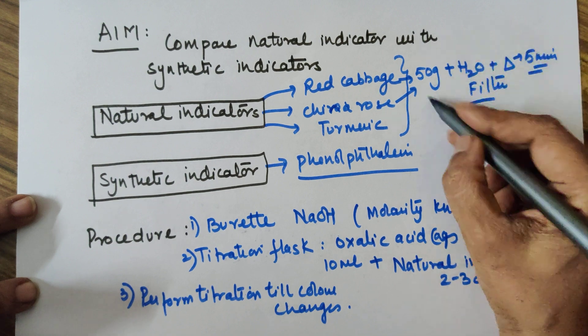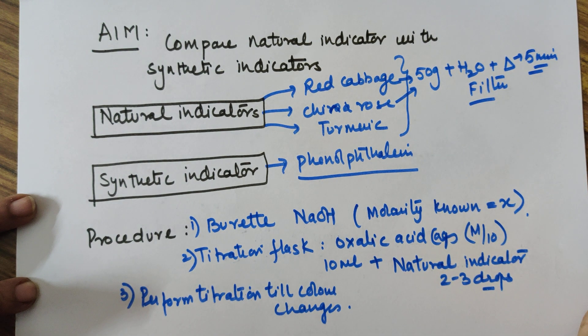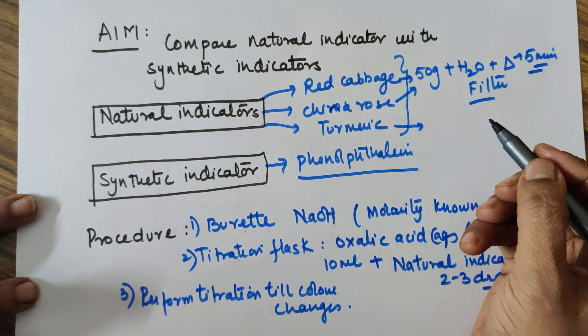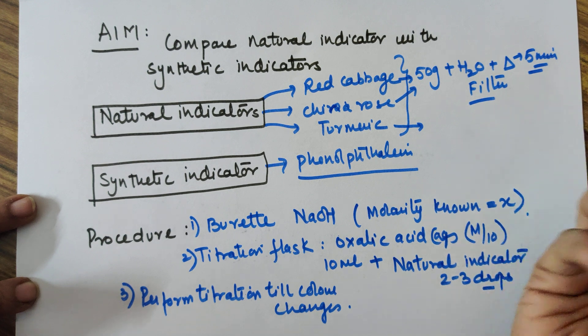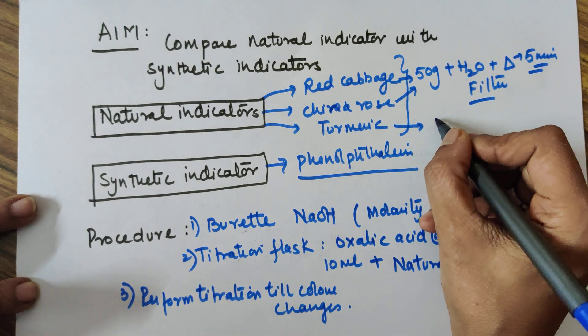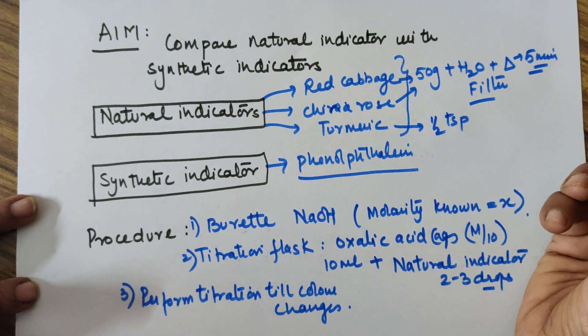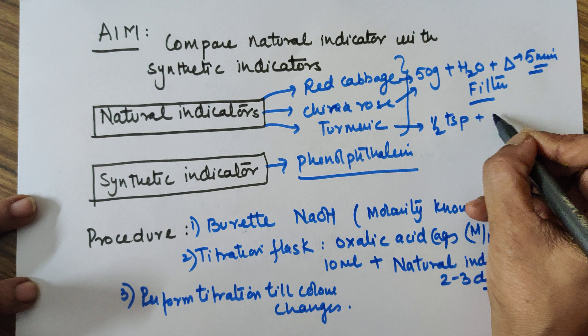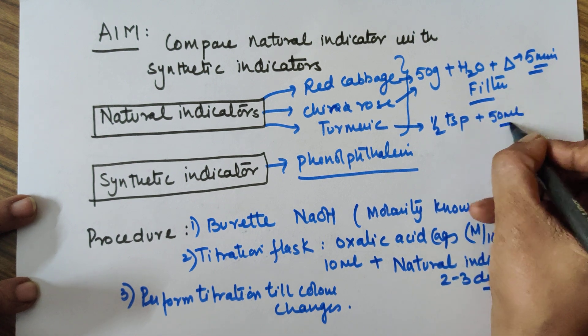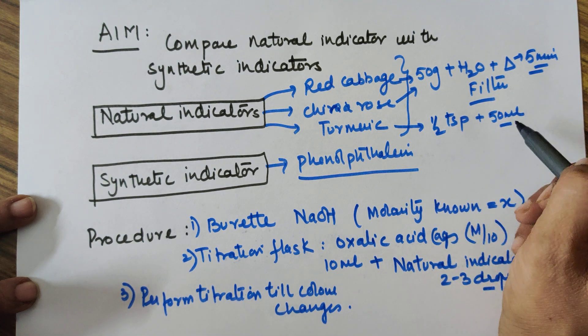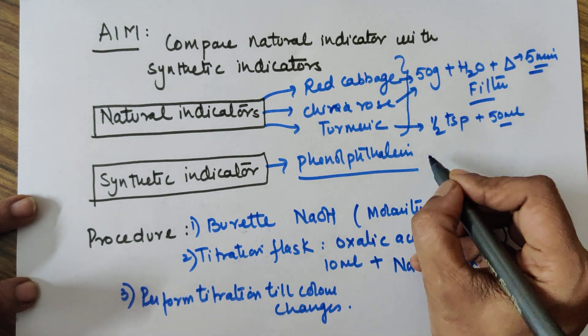If you want, you can concentrate it a bit. You should boil it for at least 5 minutes. This after filtering is your indicator solution which you will be using. For turmeric, please do not use 50 grams. If you are using raw turmeric, use around 20 grams. If using powder, take around half a teaspoon, add around 50 ml water, heat it, boil it for 5 minutes, then filter it via sieve. Phenolphthalein would be available in the lab.